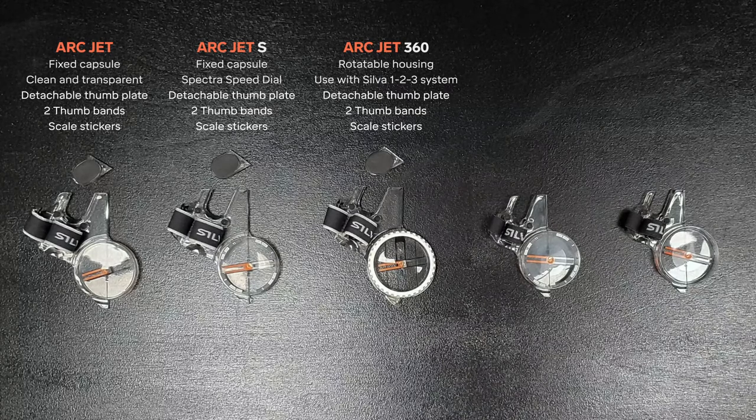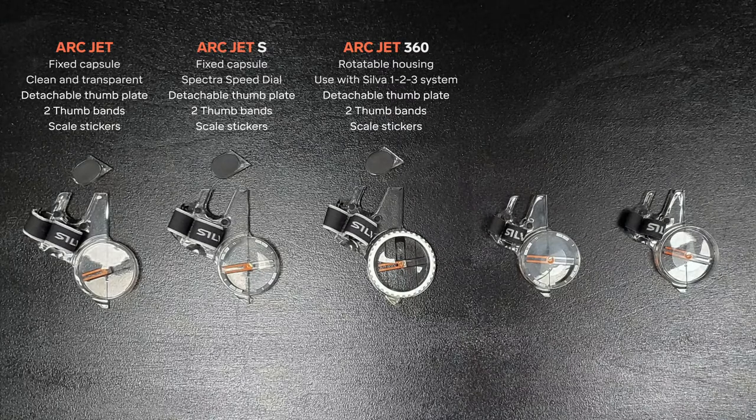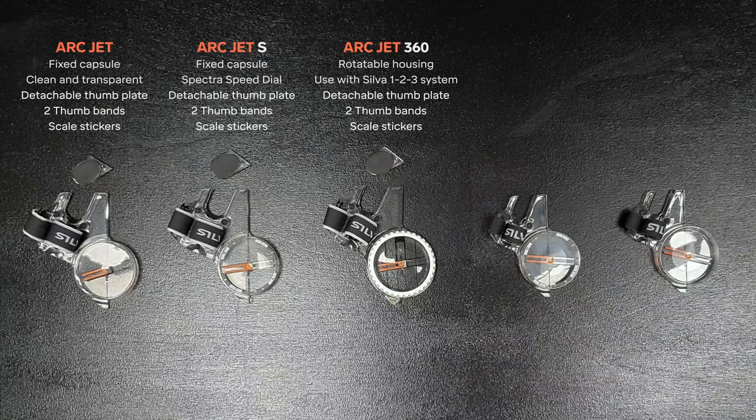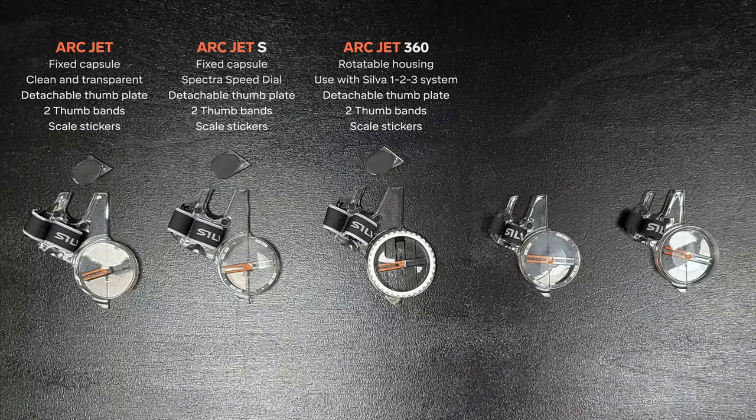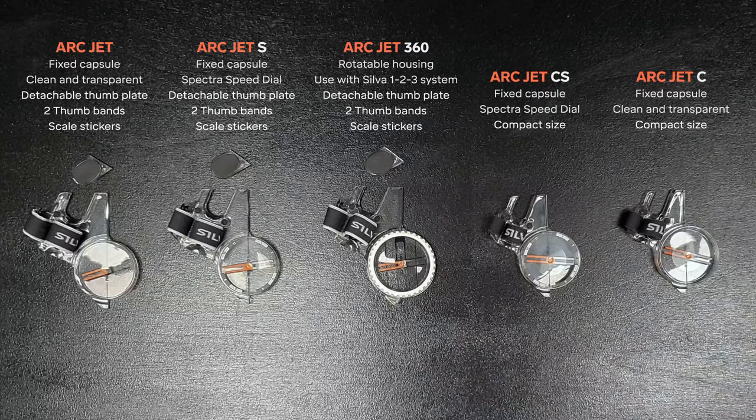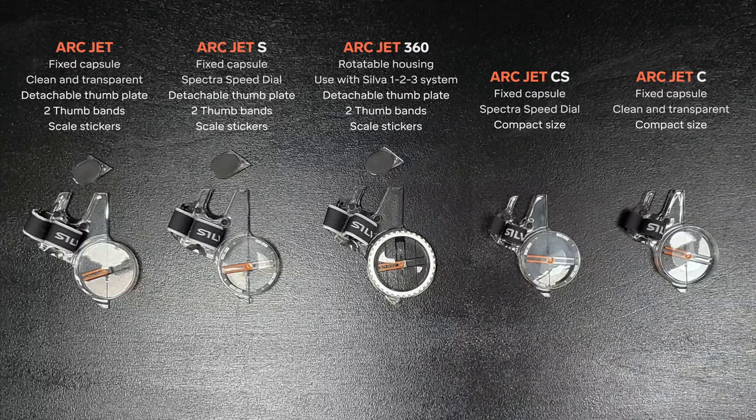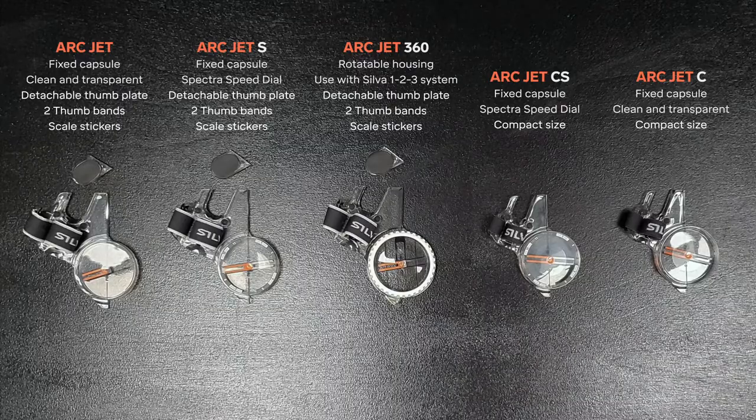The Arcjet series also includes two compact models with the same needle and capsule as the standard models, but with smaller thumb blades. The C-S model has the Spectra graphics and the Arcjet C is a cleaner version. The compact models come without scale stickers, no detachable thumb plate, and one thumb band included.